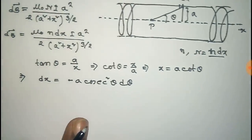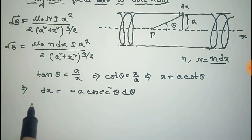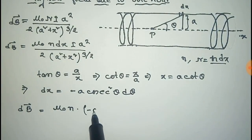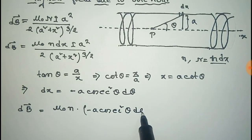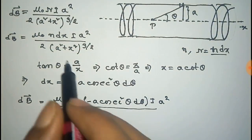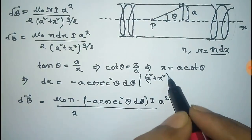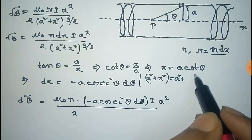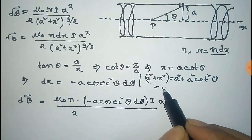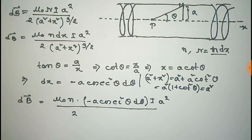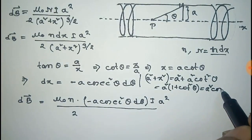After differentiating both sides we get dx equal to minus a·cosec²θ·dθ. Now we put this value into the expression. That gives dB equal to μ₀n times (minus a·cosec²θ·dθ) times I·a²/2. For a² + x², substituting x = a·cot theta gives a² + a²cot²θ equals a²(1 + cot²θ) equals a²·cosec²θ.